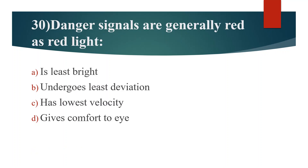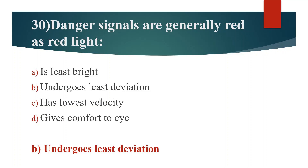Thirtieth question. Danger signals are generally red as red light. Option A: Is least bright. Option B: Undergoes least deviation. Option C: Has least velocity. Option D: Gives comfort to eye. Answer is Option B: Undergoes least deviation.